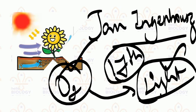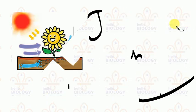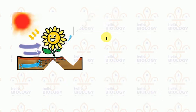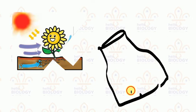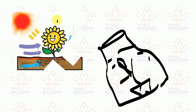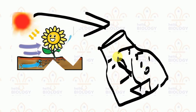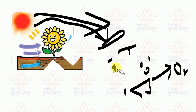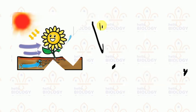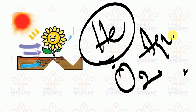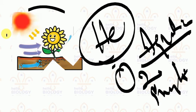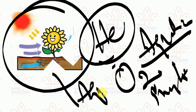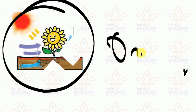Sunlight is present means oxygen will be present — Ingenhousz keenly observed this in an aquatic plant. He kept an aquatic plant in water and placed it under sunlight, then observed that bubbles were forming. He understood that these bubbles belonged to oxygen, because in the presence of sunlight every plant produces oxygen. He concluded that oxygen is produced in aquatic plants when sunlight is present, visible as bubbles.